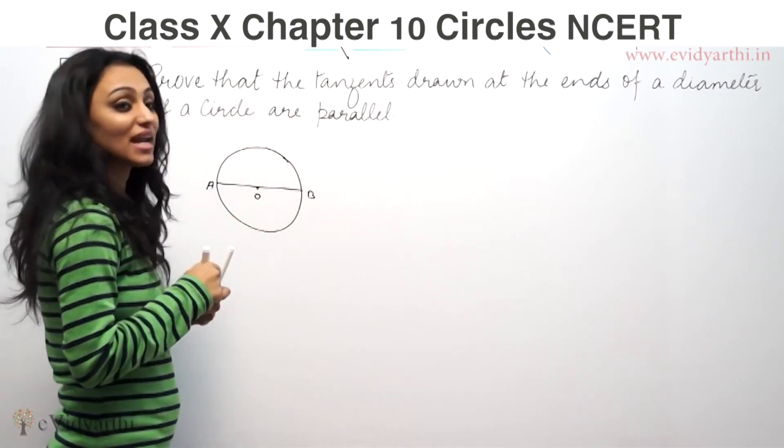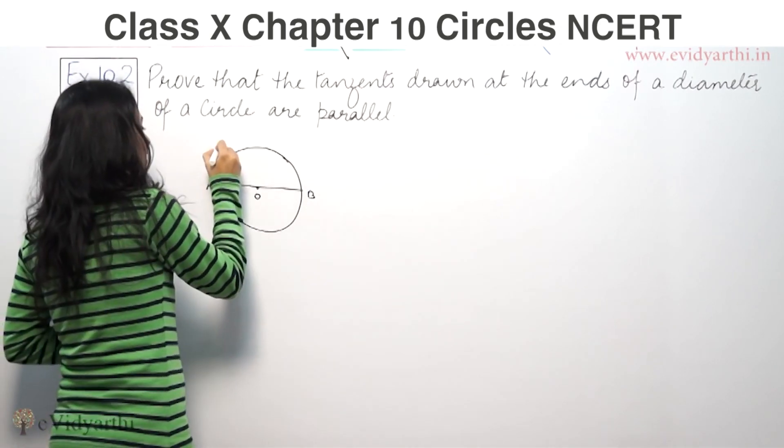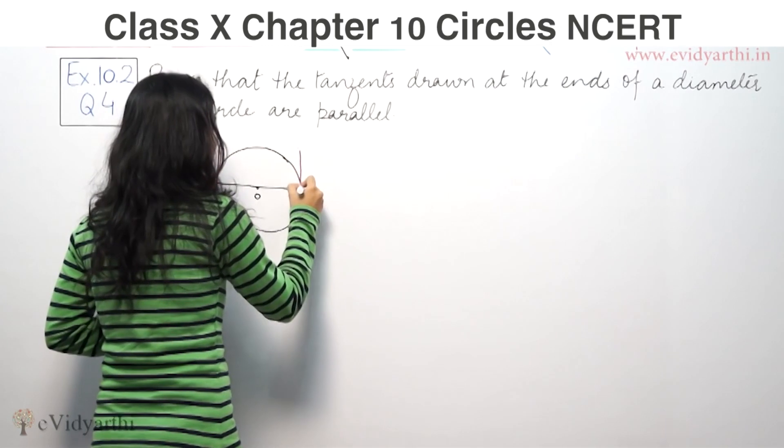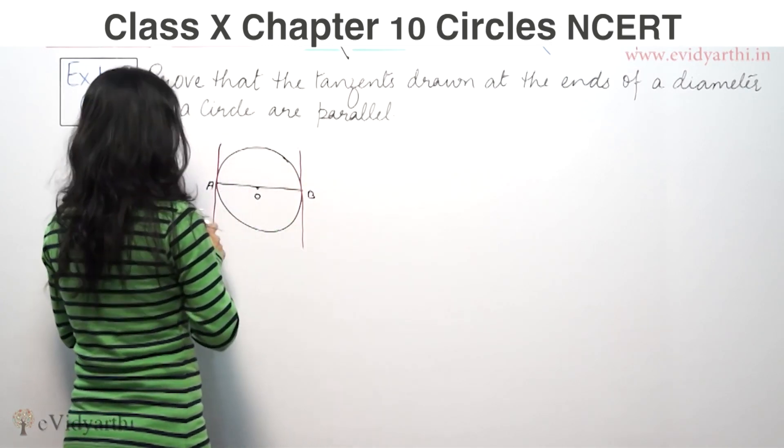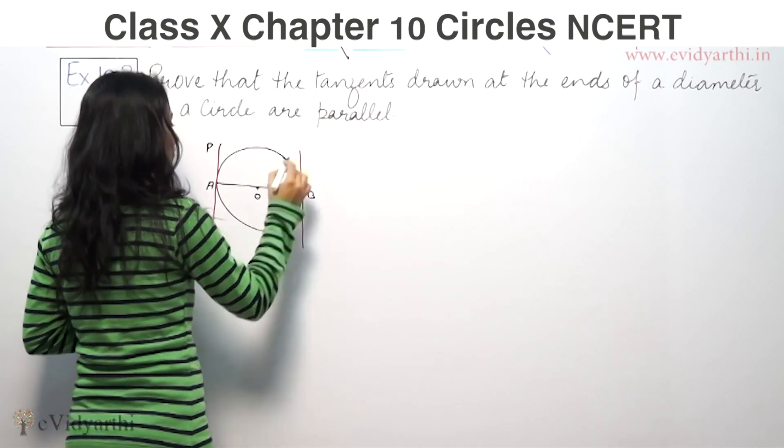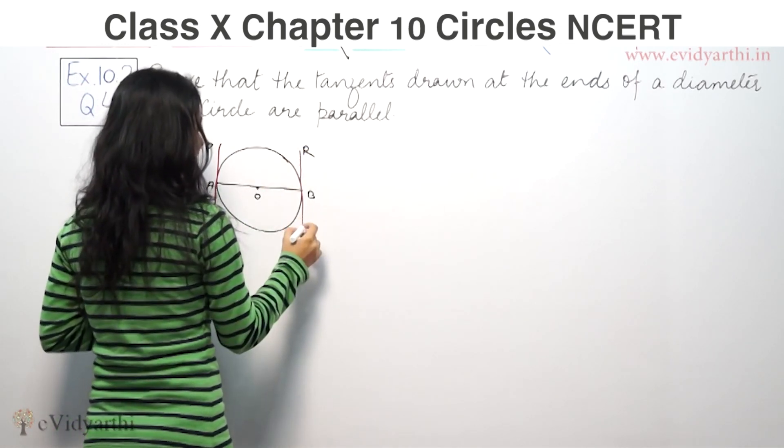Tangents drawn at the ends of the diameter, tangents drawn from A. We can keep drawing. Let's suppose this is P, this is Q, this is R and this is S.